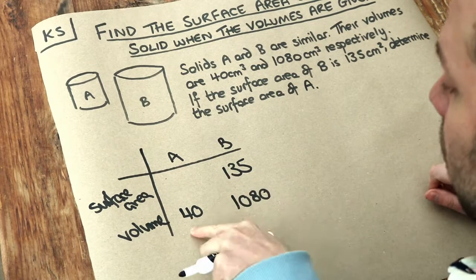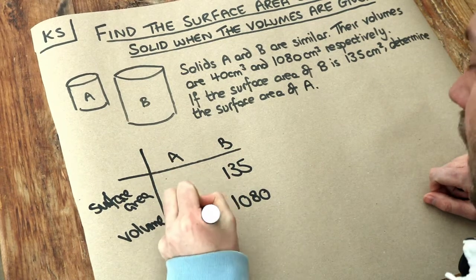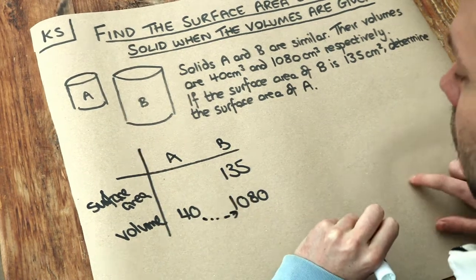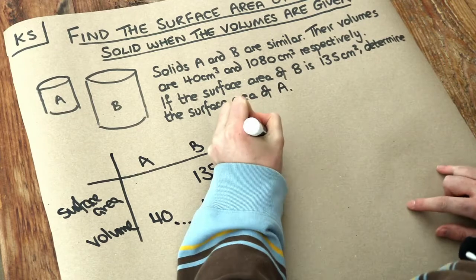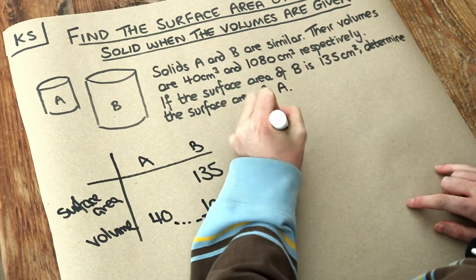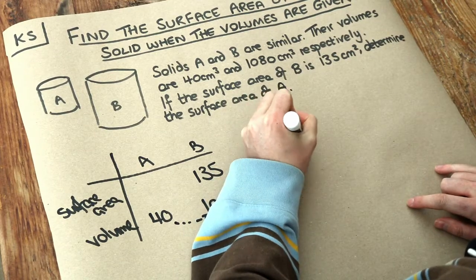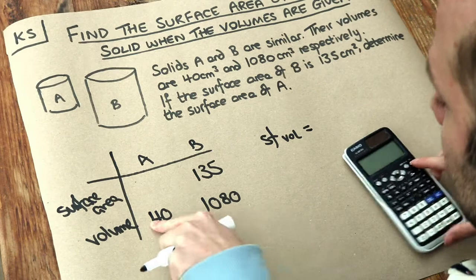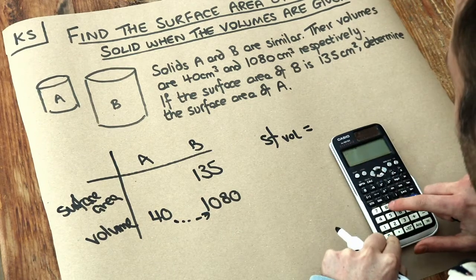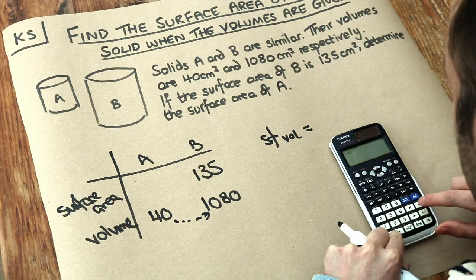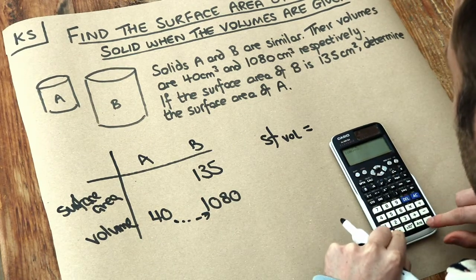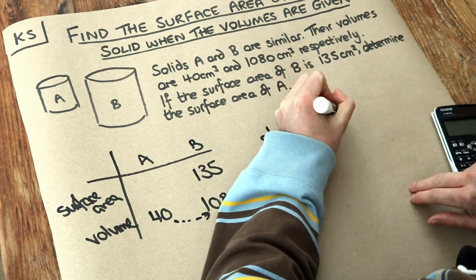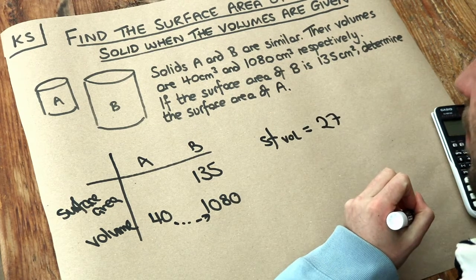Now because we're given both the volumes we can work out the scale factor of volume. We can just divide the numbers to see how many times bigger one is than the other. So we do 1080 divided by 40 and that gives us a scale factor of volume of 27.